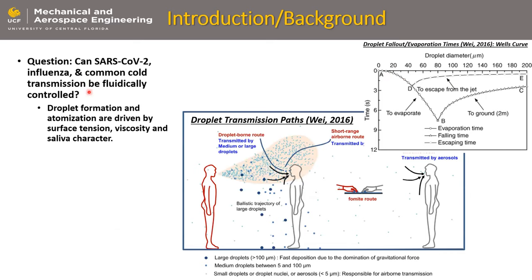We're asking if we can control transmissibility by controlling the underlying fluid dynamics in your saliva. It basically comes down to what we see here, called the Wells Curve. What you can see here is droplet size — these are droplets emitted through speech, coughing, sneezing, these sorts of things.